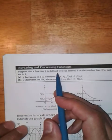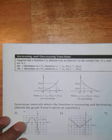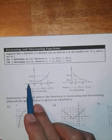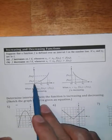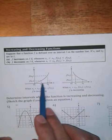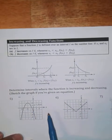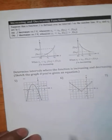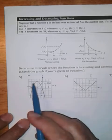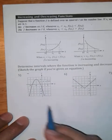Now we talk about increasing and decreasing functions. Increasing means that when you're moving from left to right, the graph is going upward. Decreasing means that when you're going from left to right, the graph is coming downward. We want to determine intervals where the function is increasing or decreasing, and if we don't have a graph, we may want to sketch one to get an idea.